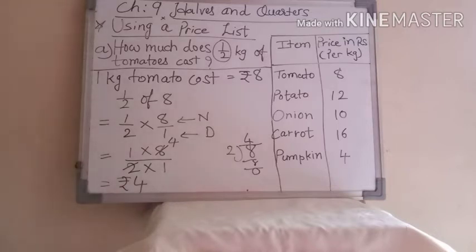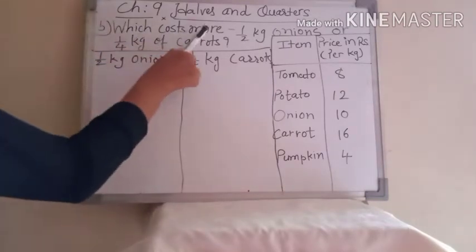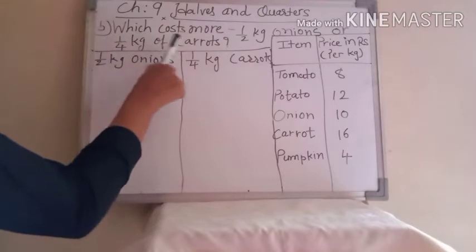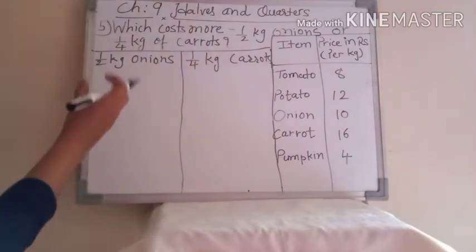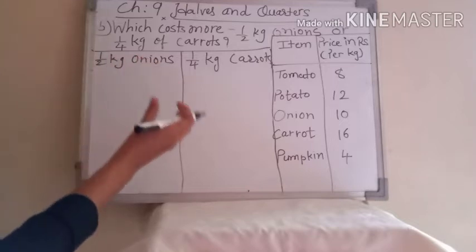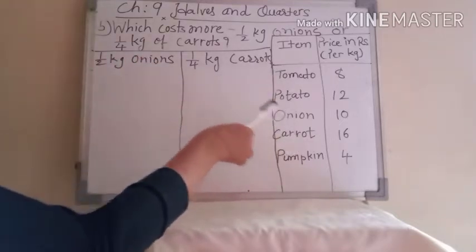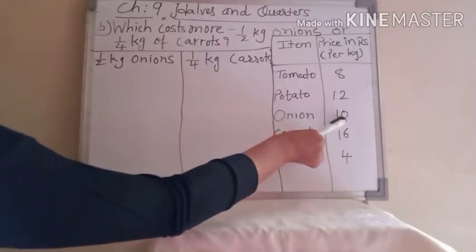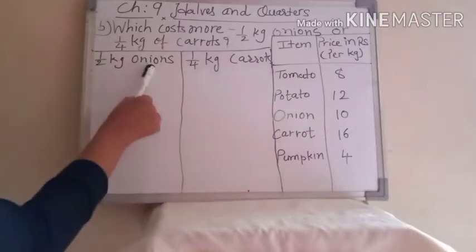Now our second question is: which costs more — half kg onions or one fourth kg of carrots? We have to find the half kg onion price versus the 1/4 kg carrot price. Let's see the price table — the price of onions per kg is 10 rupees. But we have to find the price for half kg.